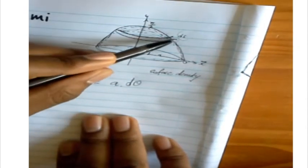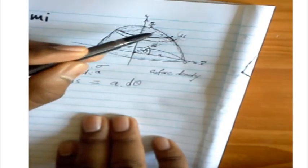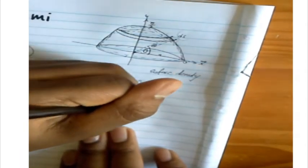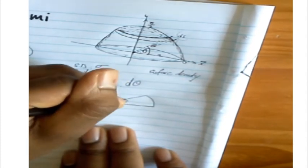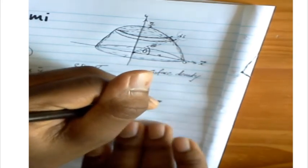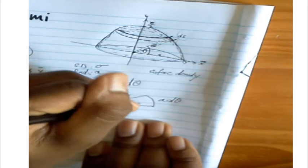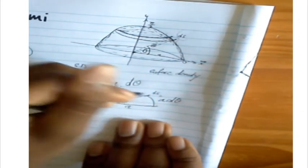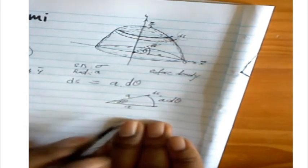Since ds is like an arc length, if we zoom in we have dθ and radius a, making that arc segment equal to a dθ. So ds = a dθ. With the first step done — we have found our slice — we move on to the second step.